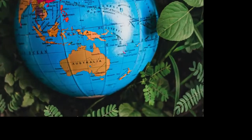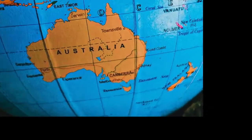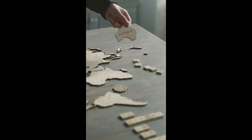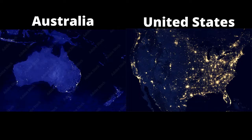Australia is the sixth biggest country on the planet. As a matter of fact, its size is generally equivalent to that of the United States without Alaska. However, if we look at the map of the United States and Australia at night, we see totally different patterns.